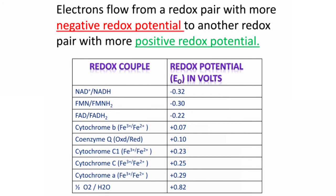Now, the electrons will move from that more negative pair to the more positive pair. That's why the flow of electrons in the electron transport chain is unidirectional. That is, they move from NADH or FADH2 to Oxygen.